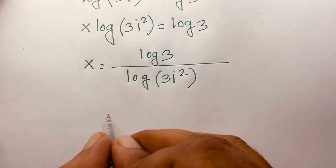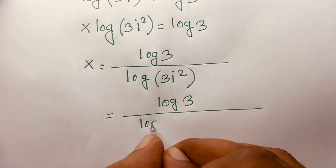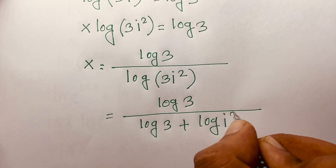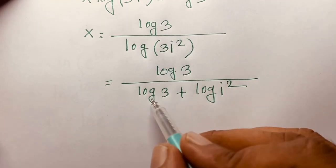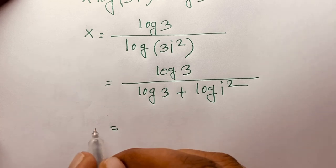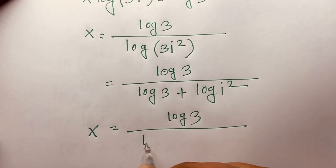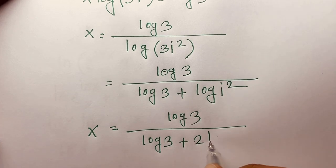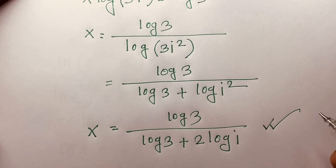If I further evaluate this expression, the denominator expands as log 3 plus log(i²). According to logarithm rules — log(ab) equals log a plus log b — and moving the exponent 2 in front, x equals log 3 divided by (log 3 plus 2 · log i). This is our other final answer for this Math Olympiad question.